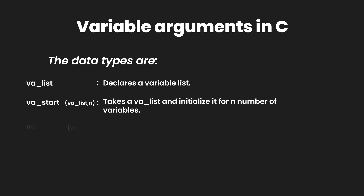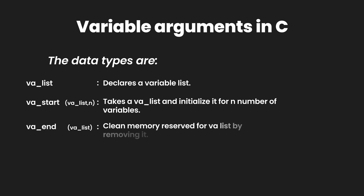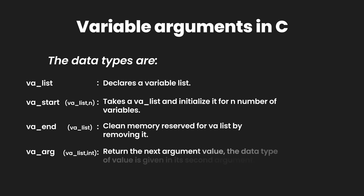Then we have va_end, which takes a variable list and cleans the memory reserved for the variable list by removing it. And lastly we have va_arg, which stands for variable arguments — it takes a variable list and a return data type, returns the next argument's value, and the data type of the value is given in its second argument.